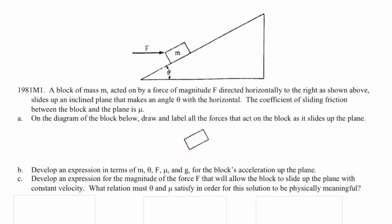A block of mass M acted on by a force of magnitude F directed horizontally to the right, as shown above, slides up an incline plane that makes an angle theta with the horizontal. The coefficient of sliding friction between the block and the plane is mu.